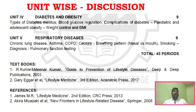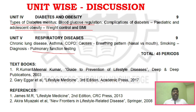Unit 4 covers types of diabetes mellitus, which is a key question area, and blood glucose regulation. Obesity is also covered in this unit. Unit 5 focuses on pulmonary function testing, which is very important, and chronic lung diseases, which is a very important question — it all relates to breathing patterns.